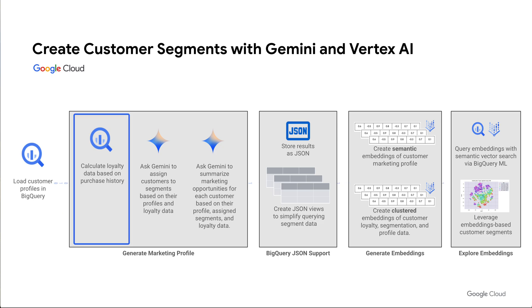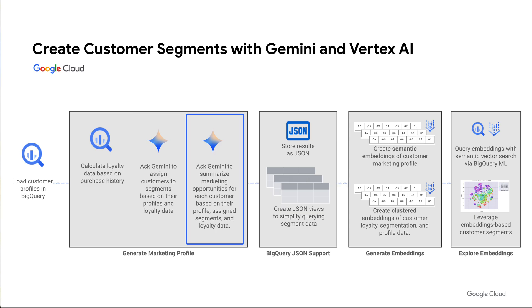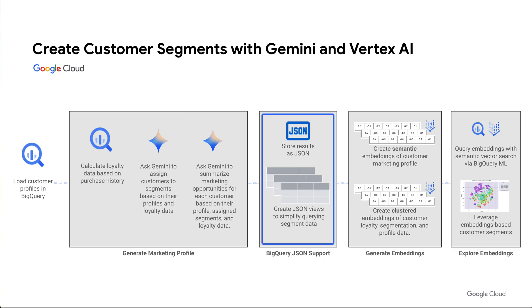Next, we calculate loyalty data for our customers based on reviews and order history in BigQuery, taking advantage of the rich enterprise data we've already collected and curated over the years. We then leverage Gemini to assign our customers to segments based on their profiles and loyalty data, avoiding hours of manual, error-prone work. Finally, Gemini summarizes each customer's profile and highlights opportunities to connect them to the products they care most about. The output of each step is JSON, which we store using BigQuery's native JSON data type, with views that leverage BigQuery's built-in JSON functions to simplify querying this complex semi-structured data.